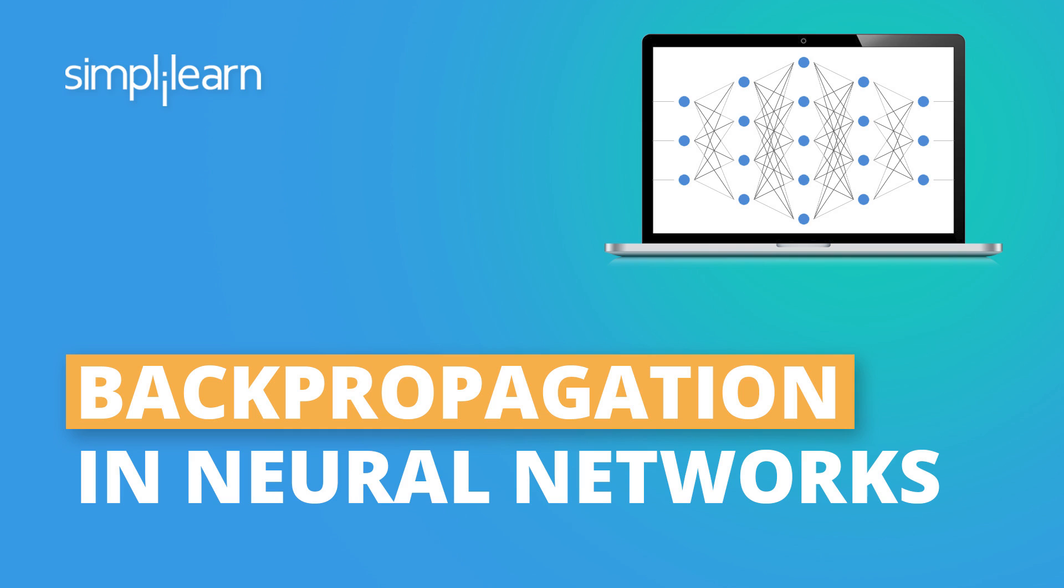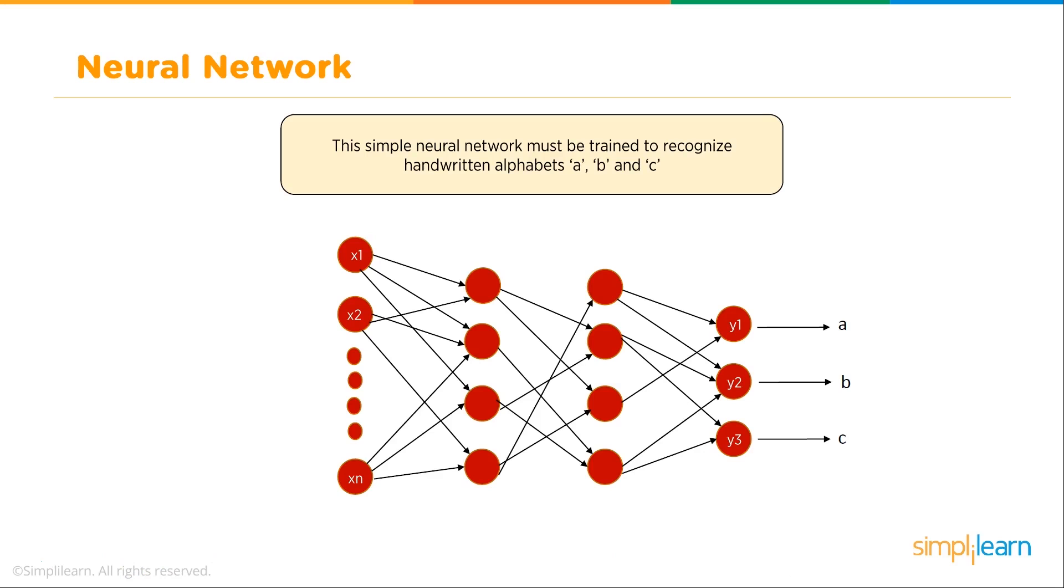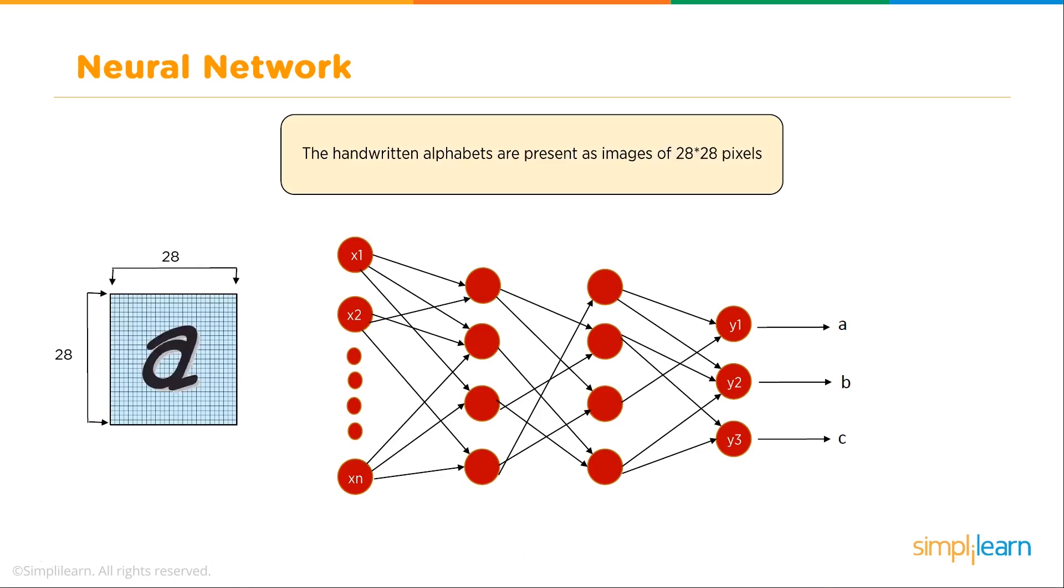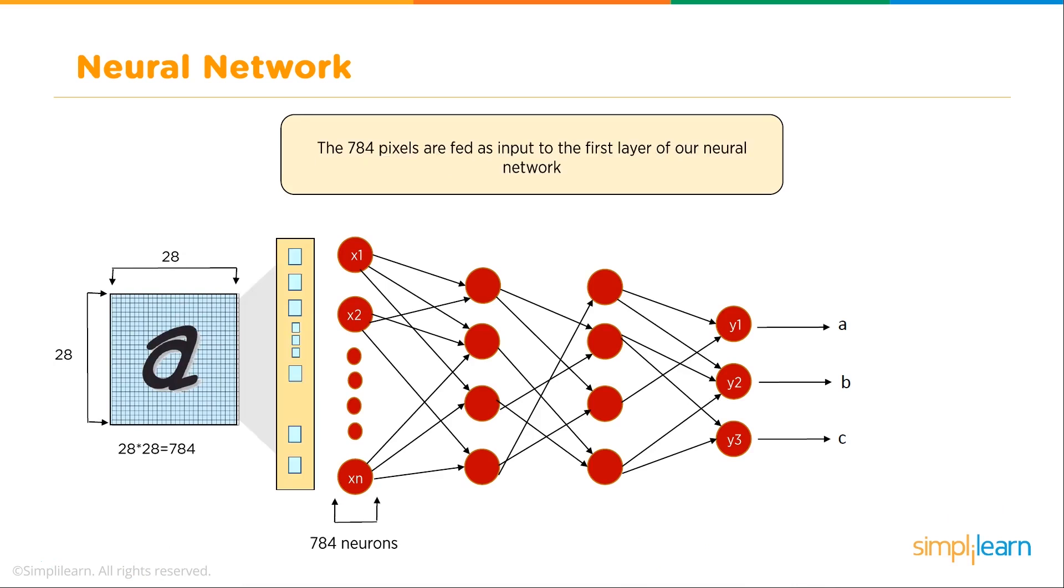When we're talking about back propagation and gradient descent, we're talking neural networks. This is a simple neural network which must be trained to recognize handwritten alphabets A, B, and C. We have our input coming in, the letter A written out on 28 by 28 pixels. The handwritten alphabets are presented as images of 28 by 28 pixels. That image comes in with 784 neurons, that's 28 times 28.